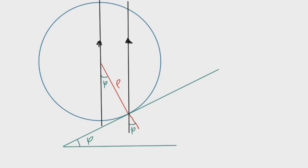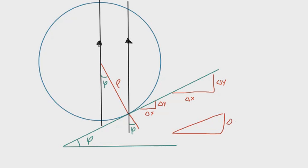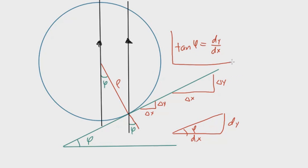We can define phi in terms of the path's derivative, since the tangent line is tangent to the path. Looking at the ratio of the change in y to the change in x, the ratio remains the same regardless of triangle size. Using the concept of derivatives, we define an infinitesimal triangle with sides dy and dx at angle phi, so that tan(phi) = dy/dx. This will be crucial when solving for the radius of curvature.